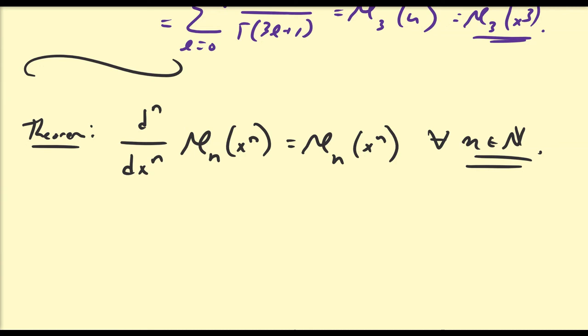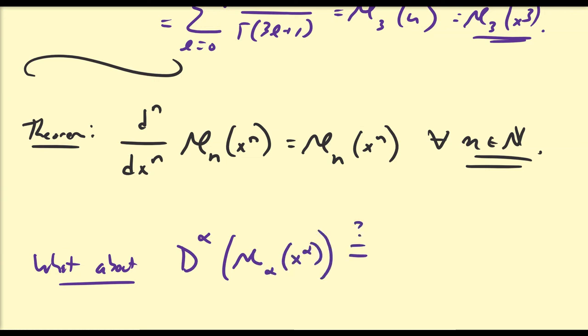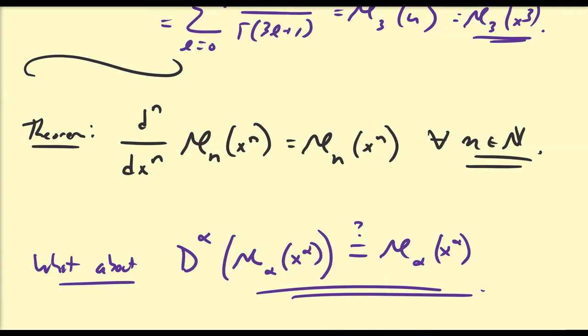We've also explored antiderivatives of E_n(x^n), which are like negative-order derivatives. This raises the question: is there a connection to fractional-order derivatives? Specifically, does the α-order fractional derivative of E_α(x^α) equal E_α(x^α)? We'll revisit this later — this is an introduction to Mittag-Leffler functions and how they can be used to analyze fractional derivative and integral operators, just as exponential functions are used for classical differential operators.